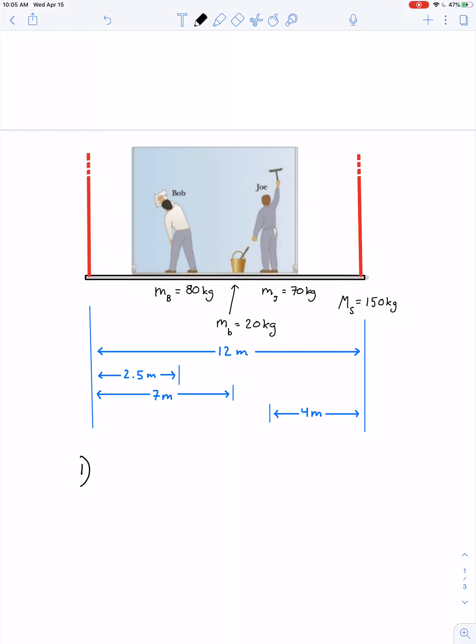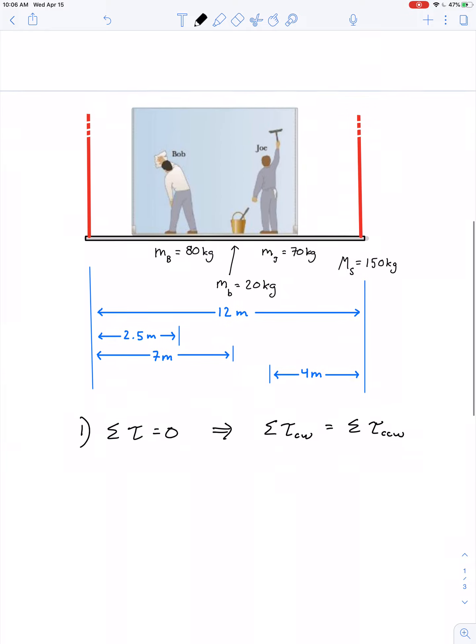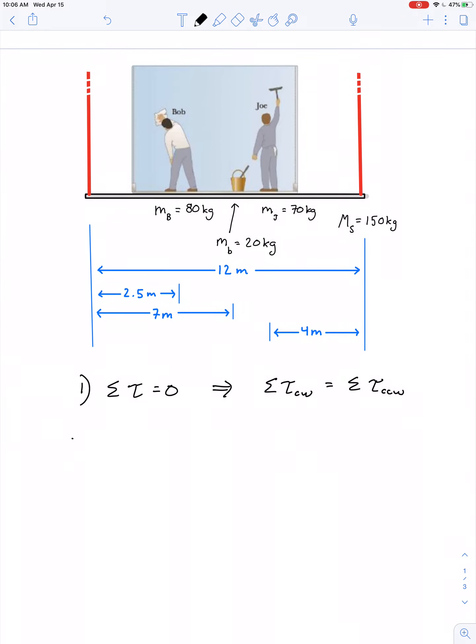If net torque is equal to zero, that's the same as saying the sum of all the clockwise torques balance out the sum of all the counterclockwise torques. We have to set an axis of rotation before we can calculate any torques.